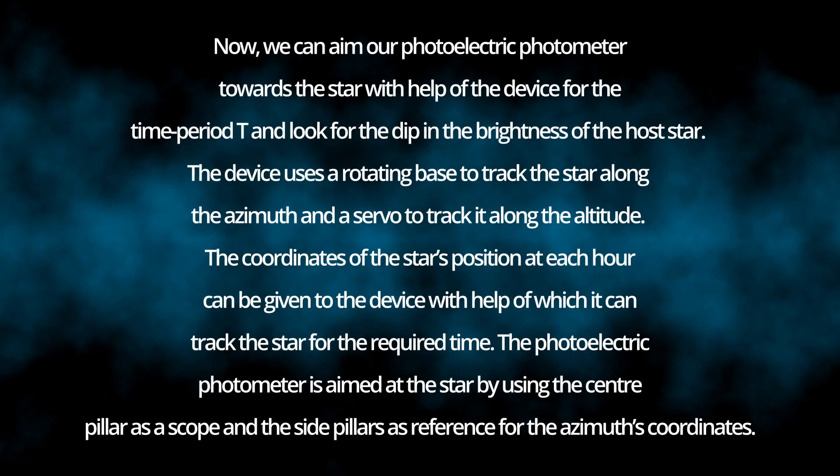After predicting the position of the planet, we can then aim our photoelectric photometer towards the star with help of the device for the predicted time period. And if the host star's apparent brightness shows a dip in it within that time period, we can confirm the presence of the following exoplanet.